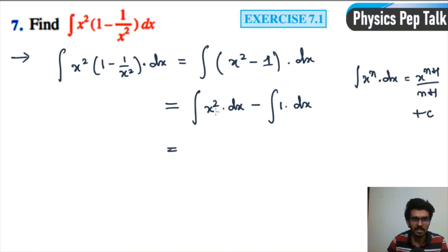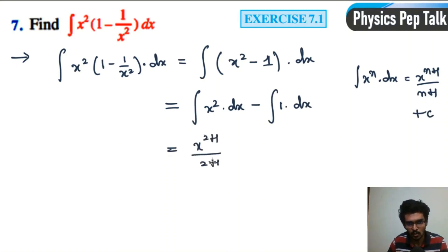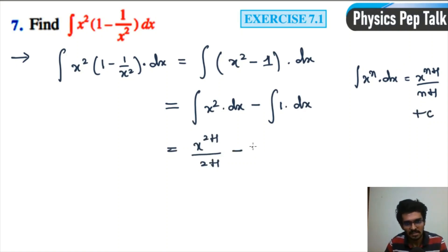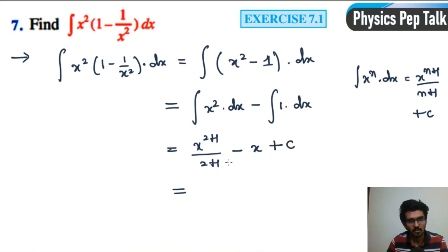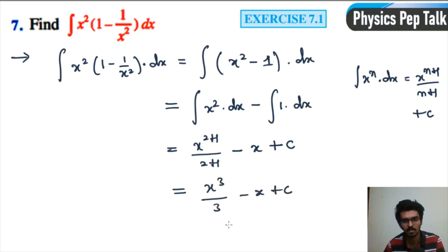Therefore, using the power rule — integral of x to the power of n with respect to x equals x to the power of n plus 1 divided by n plus 1 plus c — we get integral of x squared is x to the power of 2 plus 1 divided by 2 plus 1, minus the integral of dx. That is x to the power of 3 divided by 3 minus x plus c. This is the required answer.